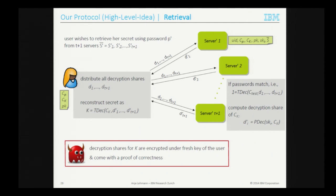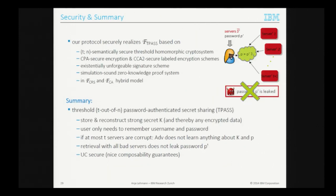The protocol is proven to securely realize the ideal functionality assuming a semantically secure threshold homomorphic encryption scheme. We also need two further encryption schemes — one CPA-secure and one CCA-secure — a signature scheme that is existentially unforgeable so servers can sign messages, a simulation-sound zero-knowledge proof system for correctness of re-randomizations, and the proof is in a hybrid model assuming a CRS and a CA. Having servers with public keys does not mean they are trusted by definition.